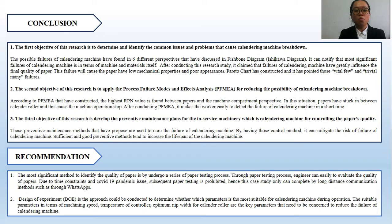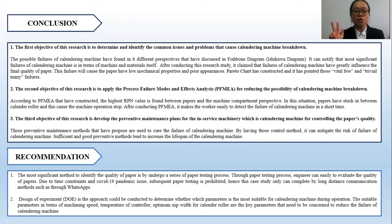There are two recommendations to improve the research study. Design of Experiment (DOE) is one of the approaches that can be used to determine which parameters would be involved. For example, suitable parameters in terms of machining speed, temperature controller, and optimum nip width for the calendar roller are key parameters that need to be addressed in order to ensure that the failure of the calendering machine tends to be mitigated.